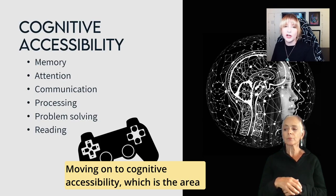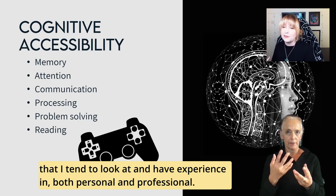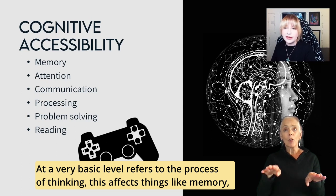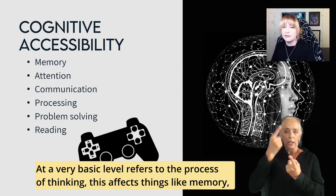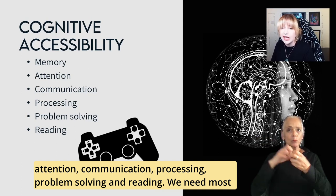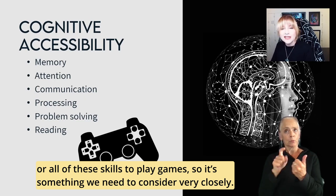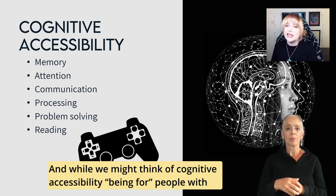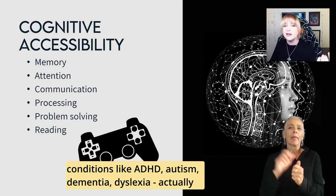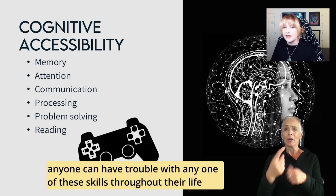Moving on to cognitive accessibility, which is the area I tend to look at — I've got experience in it both personally and professionally. At a very basic level, cognition refers to the process of thinking, so this affects things like memory, attention, communication, processing, problem solving, and reading. We need most or all of these skills to play games. While we might think of cognitive accessibility as being for people with conditions like ADHD, autism, or dyslexia, actually anyone can have trouble with any one of these skills throughout their life.